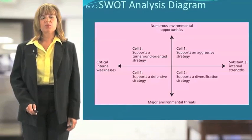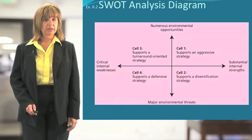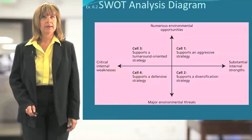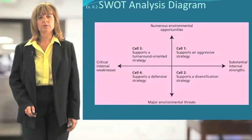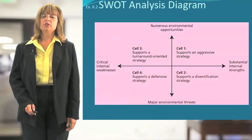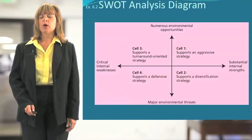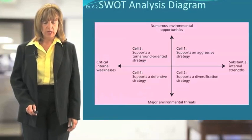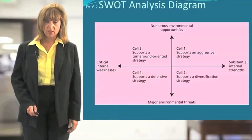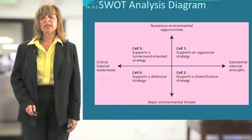So remember, when you're thinking SWOT: SW — strengths and weaknesses — are internal; opportunities and threats are external. The SWOT analysis allows you, once you look at the attributes, skills, and pieces of your organization, to choose whether you want an aggressive strategy, a turnaround strategy, a defensive strategy, or a 'let's just get rid of it' strategy.